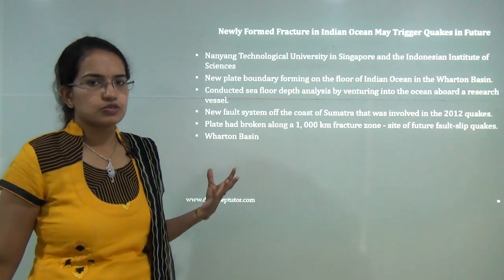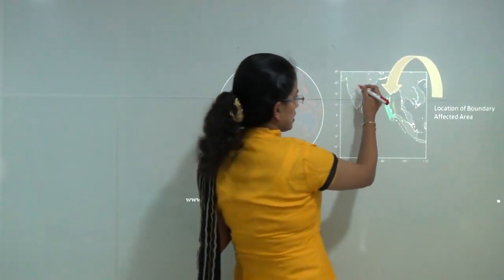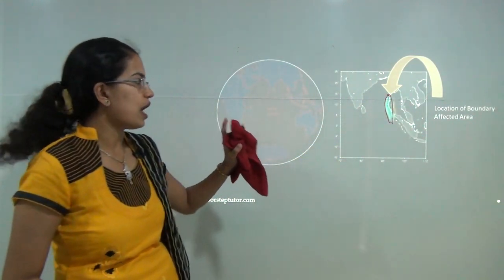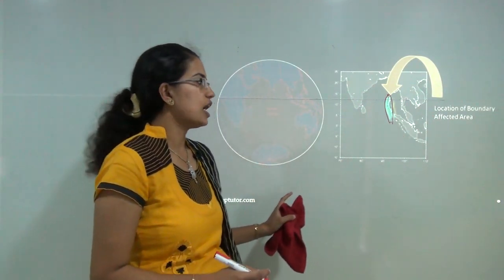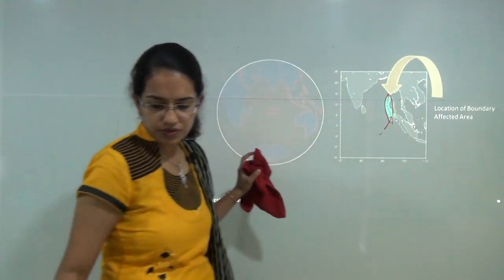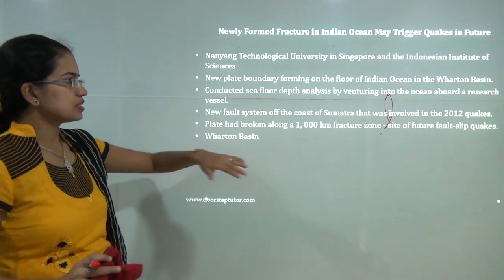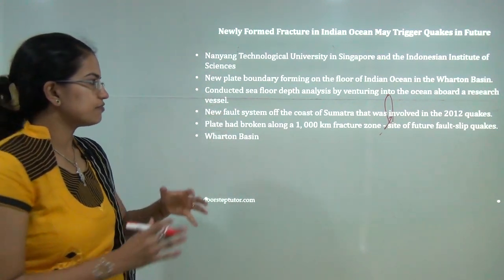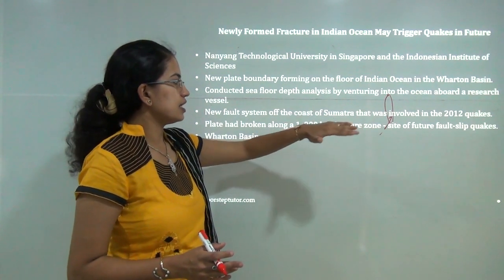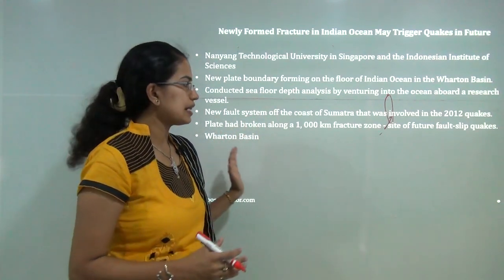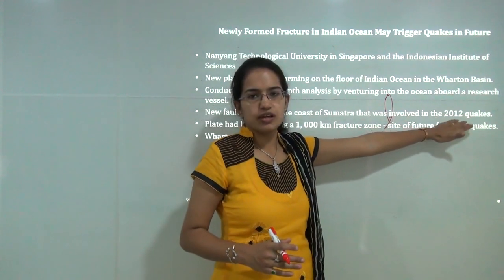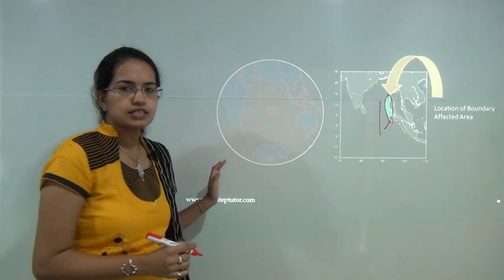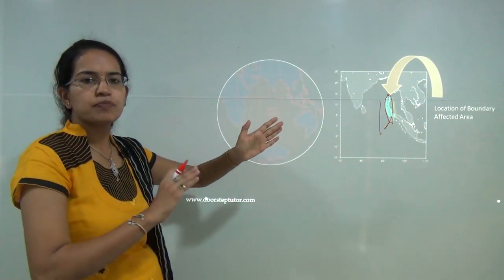The next topic is the newly formed fracture in the Indian Ocean, seen in the Wharton Basin — located between the Indian subcontinent and the island groups of Indonesia. It is expected this fracture would trigger an increased number of earthquakes in the region. This was discovered by scientists from Singapore and Indonesian universities through sea floor spreading and depth analysis. The system is nearly 1,000 kilometers from the Indian mainland and came into news after the 2012 earthquakes. It is very close to the 90 East Ridge that divides the east and west meridians.